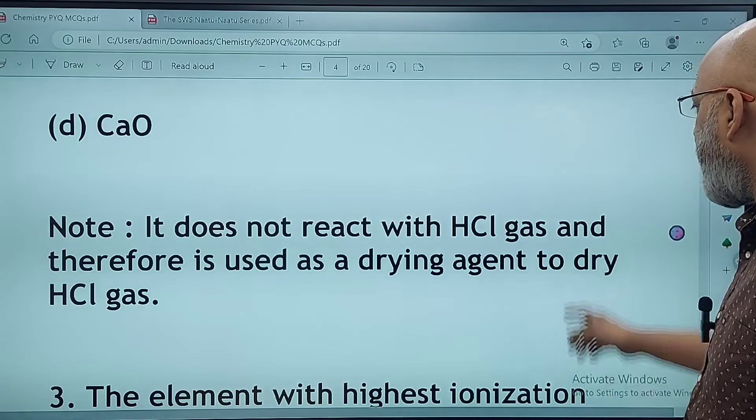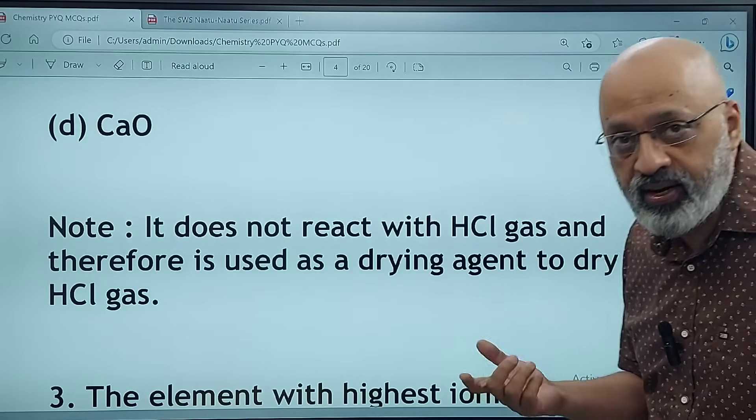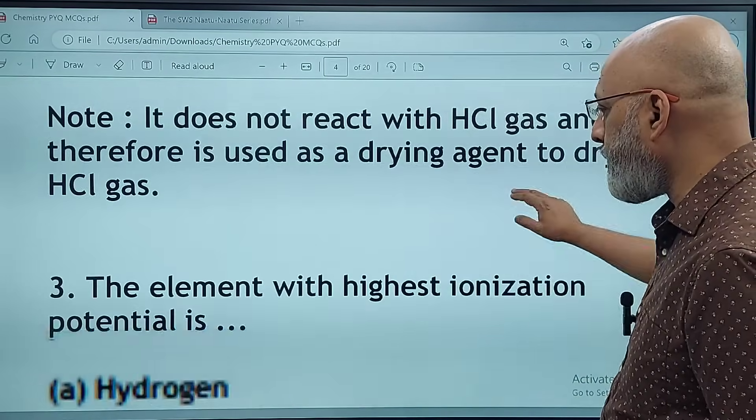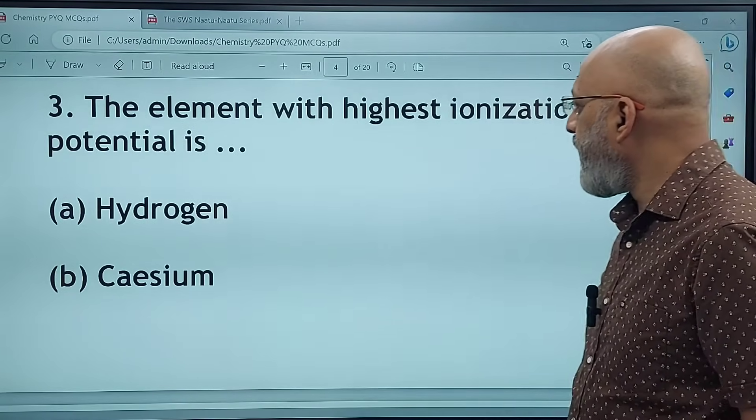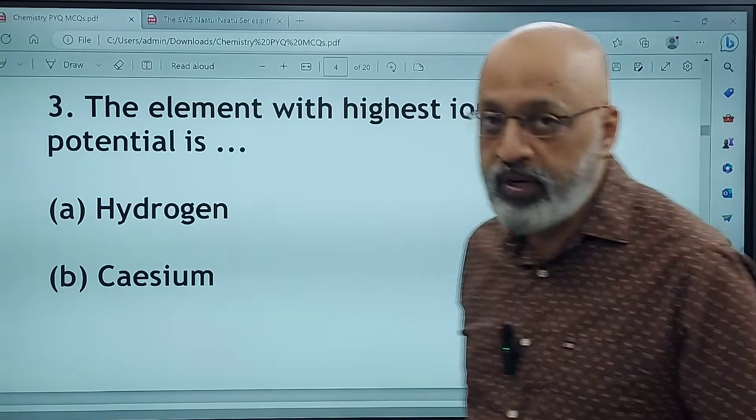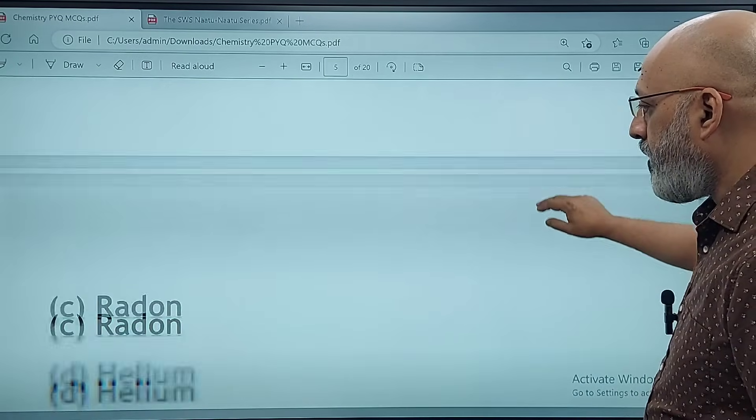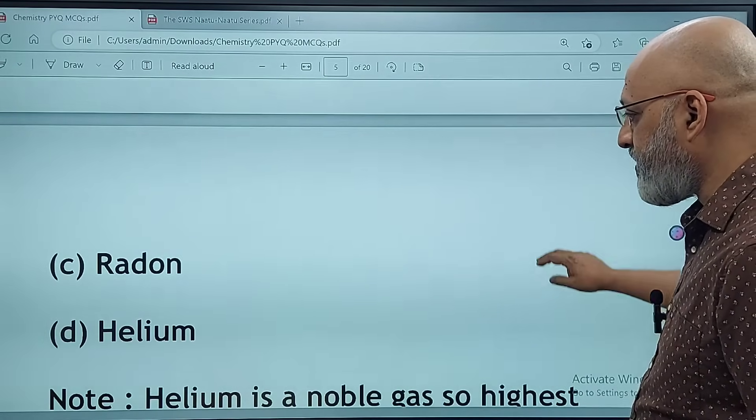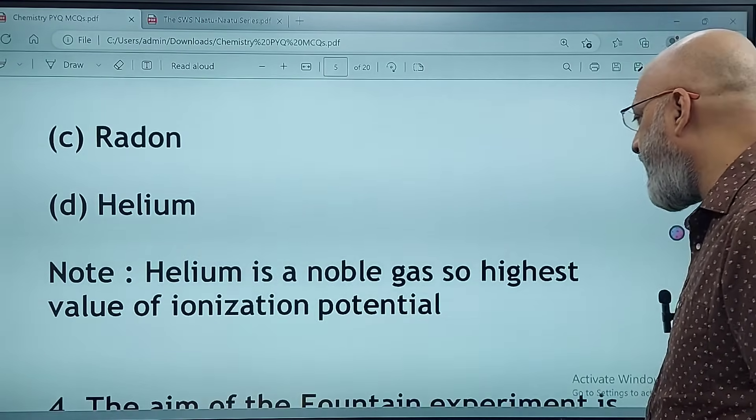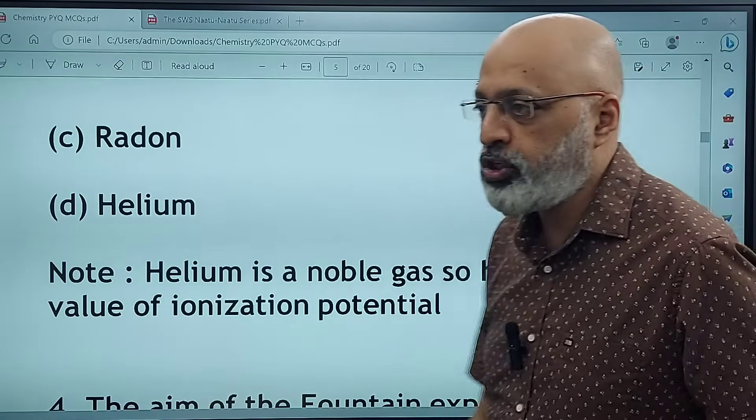The element with the highest ionization potential is hydrogen, cesium, radon, or helium. The correct answer is D, helium. Helium is a noble gas, so it has the highest value of ionization potential.